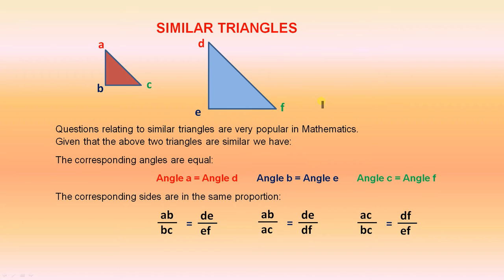The corresponding sides are in the same proportion. Now we have to think carefully about this. Now let's see what this means. Firstly, corresponding sides. That means the two sides that are in the same position on each of the triangles are in the same proportion. And what that means is this.